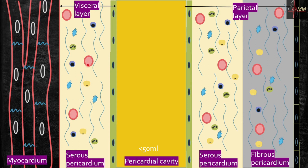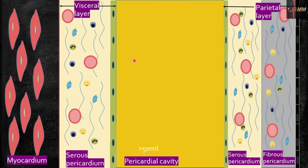You have blood vessels and connective tissue cells like fibroblasts, macrophages, and neutrophils. There are also fat cells present. Under 50 milliliters is normal fluid in the cavity. If the fluid accumulates to more than 50 milliliters, this is pericardial effusion. A question that comes to mind: how does the fluid accumulate?